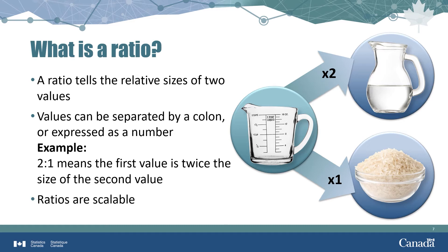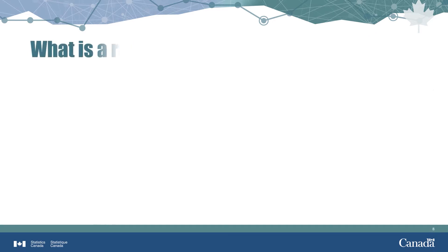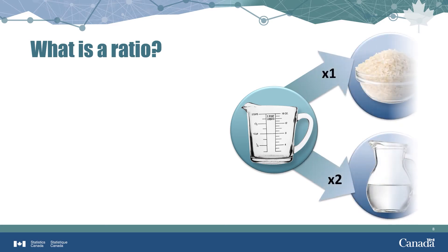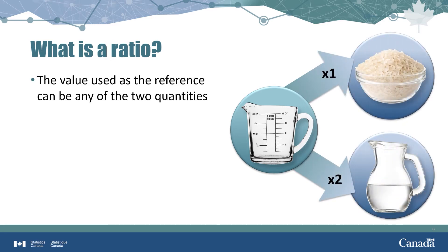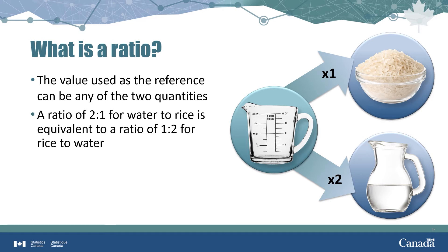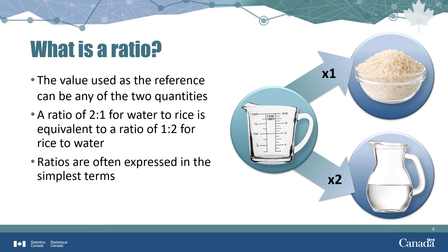A good example is cooking rice. The instructions might say 2 parts water to 1 part rice. It doesn't matter if you are cooking for 2 people or 20 — knowing the ratio of 2:1 water to rice means that whatever volume of rice you have, double it to get the amount of water. Another difference is that in a ratio, you can choose which quantity is used as the reference. The ratio is also often expressed in the simplest terms — a ratio of 4:2 is better expressed as 2:1.